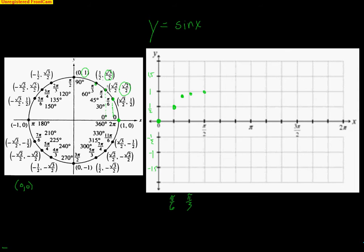Now we continue going around the unit circle. At 2 pi over 3, it starts to shrink back down to radical 3 over 2, about 0.87. At 3 pi over 4 we're at radical 2 over 2, about 0.7. At 5 pi over 6 we've shrunk back to 1/2. And when we get to pi, the y-coordinate is back to 0. So we grow, grow, grow, then shrink, shrink, shrink.